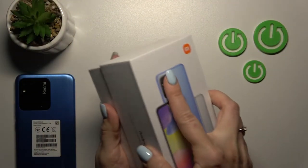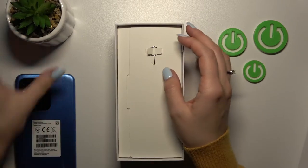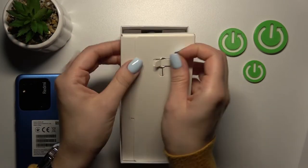First, let's open the box. The first thing we can see is the device itself, and here we have the SIM eject tool.